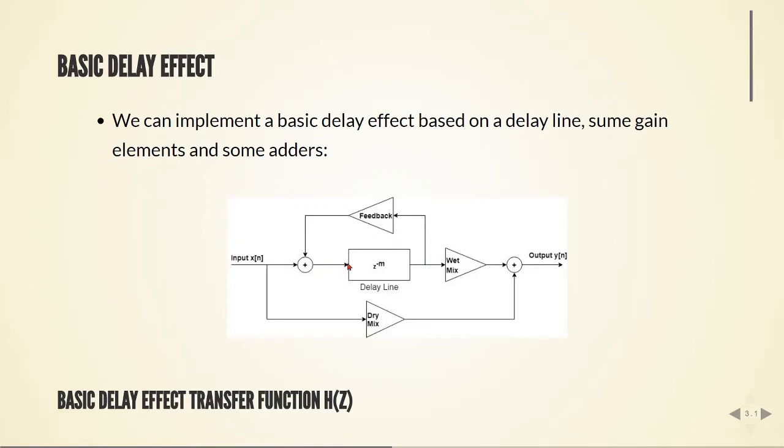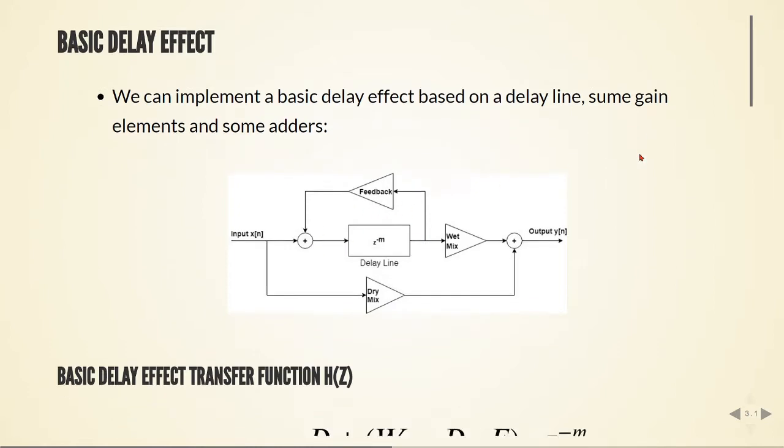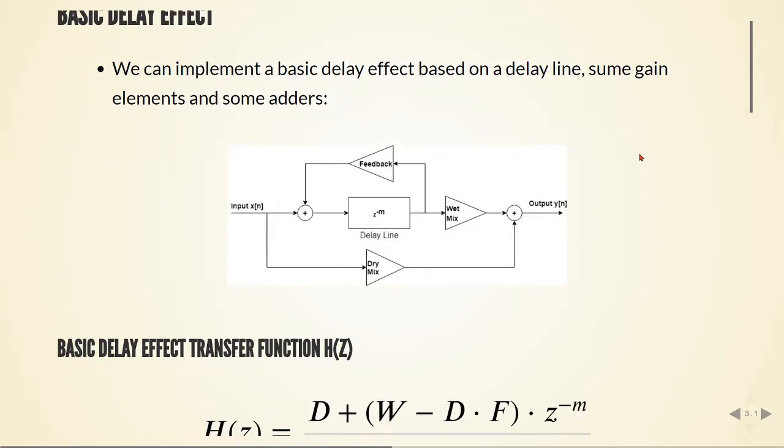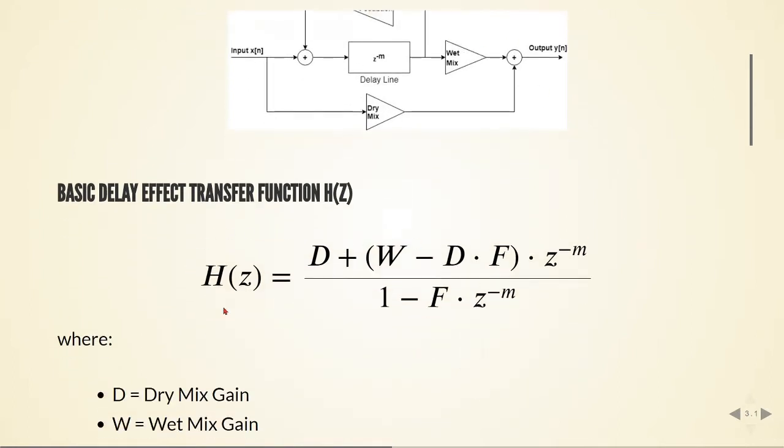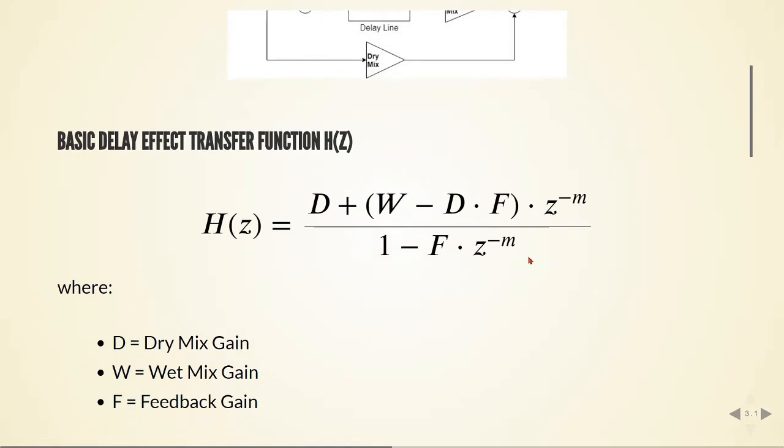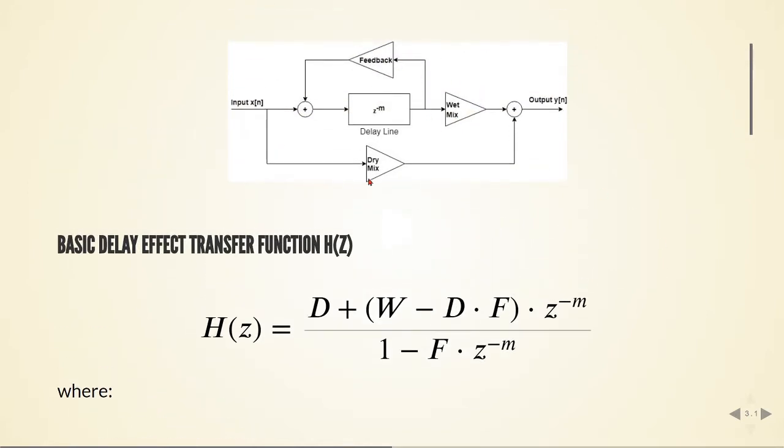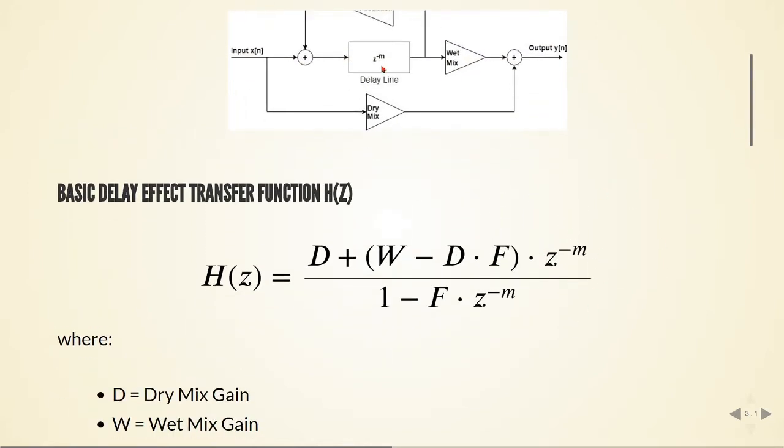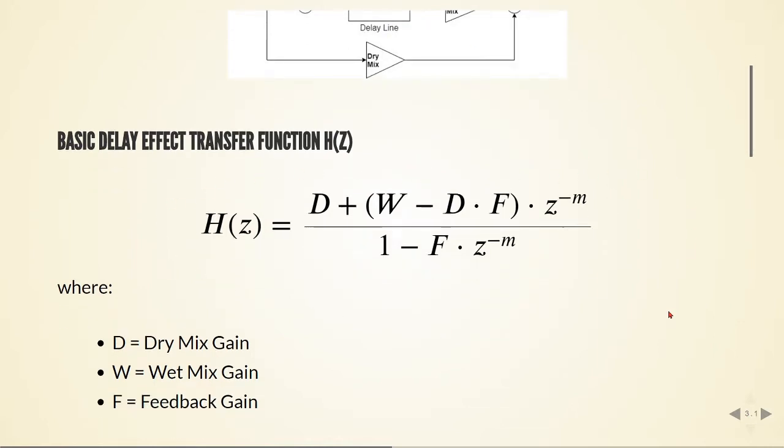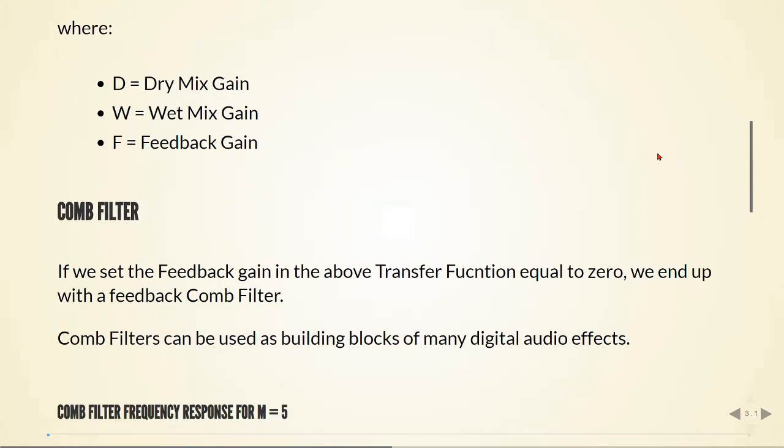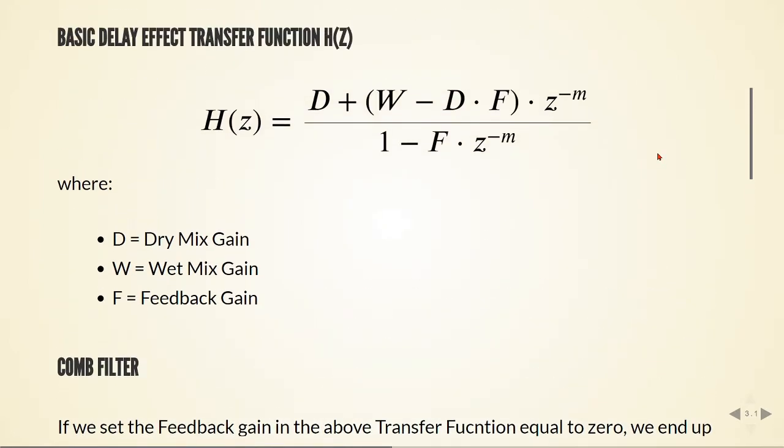The transfer function for this block diagram is given by this equation here, where D is the dry mix gain, W is the wet mix gain, and F is the feedback gain. These gains here, z to the power of minus m is our delay line, and we have this transfer function. So we can analyze this transfer function in a special case.